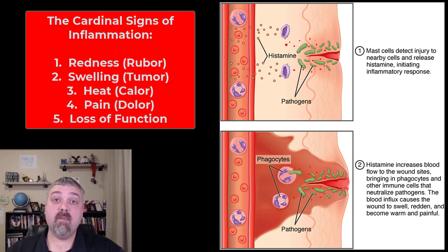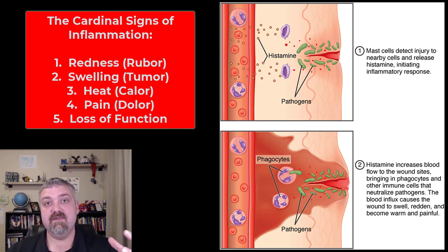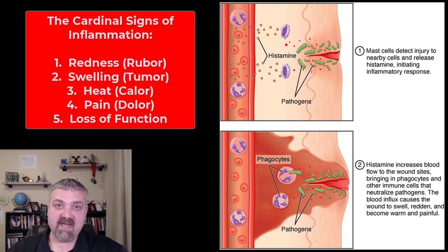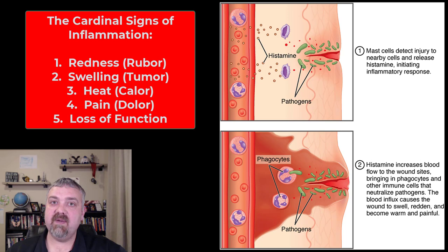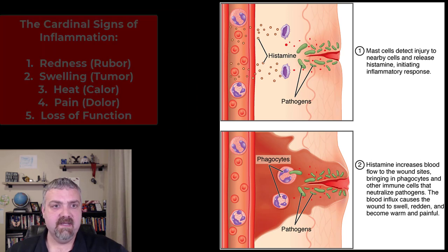Remember, blood is warmer than the rest of your body, and blood is going to bring all this fluid with it — so that accounts for the redness, the swelling, and the heat. Pain is going to be caused by the tissue damage and the chemicals that are released during the inflammatory process.